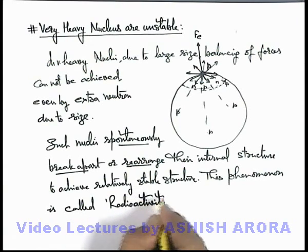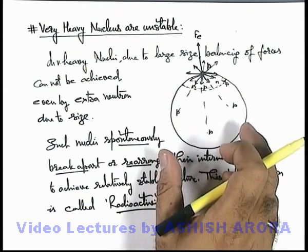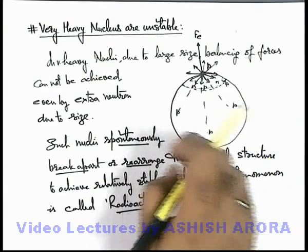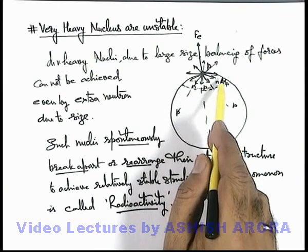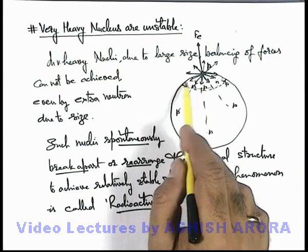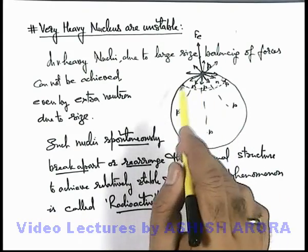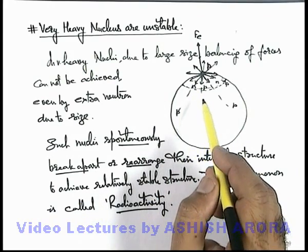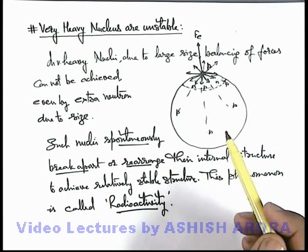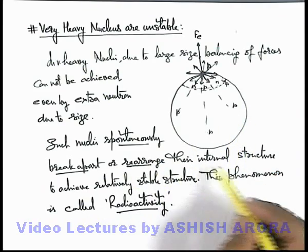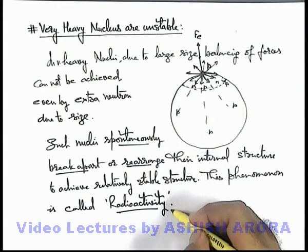In upcoming sections we will study about radioactivity in detail. But here you need to understand: if the nuclear size is very large, then for very heavy nuclei, these become unstable because the electrostatic repulsion is quite large compared to the nuclear attraction, because neighboring nucleons cannot provide enough nuclear attraction to balance the total electrostatic repulsion. In such situations, the nuclear structure becomes unstable because of imbalance of forces on the protons on the surface of the nucleus. Such nuclei break apart or rearrange their internal structure to achieve relative stability. This phenomenon we call radioactivity.